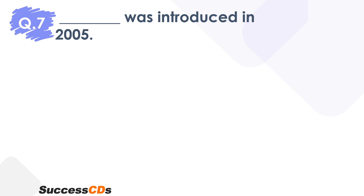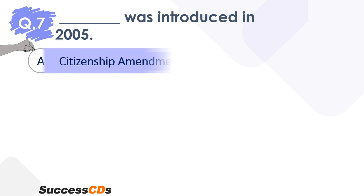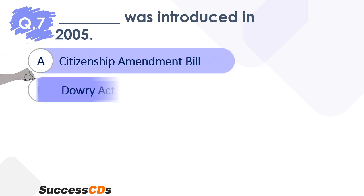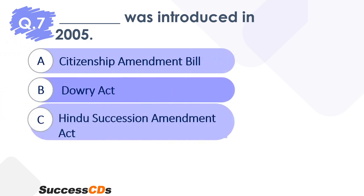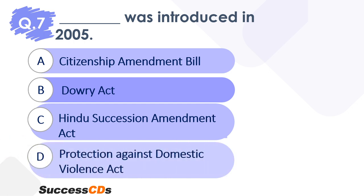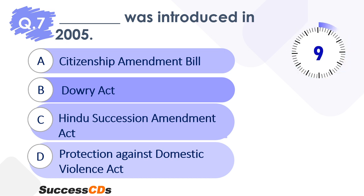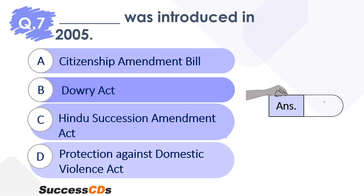Moving to question 7. Dash was introduced in 2005. Your options are: citizenship amendment bill, dowry act, Hindu succession amendment act, or protection against domestic violence act. Time begins now. Quickly tell me what the correct answer can be. The right answer is going to be option C.